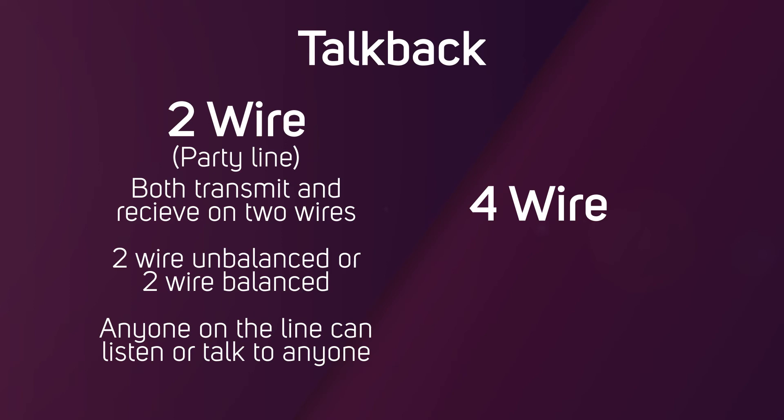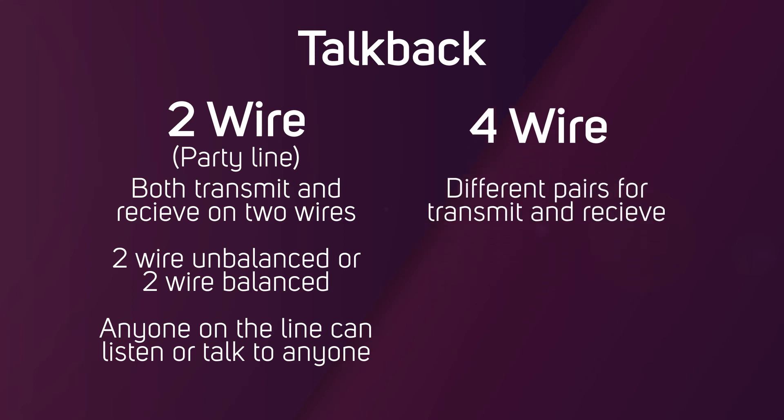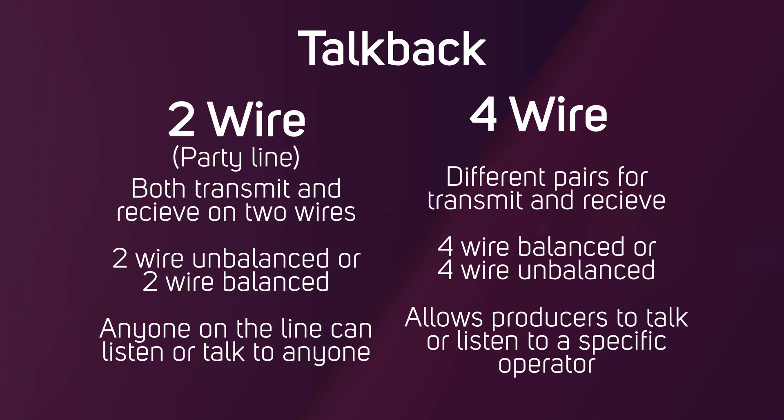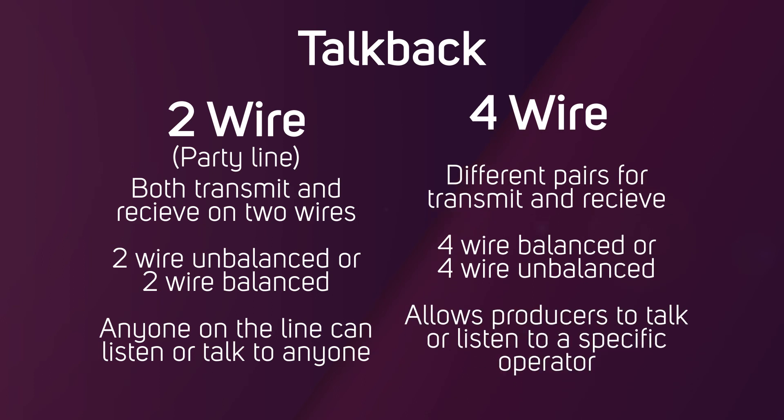Four-wire talkback systems use different pairs for transmit and receive, using either four-wire balanced or four-wire unbalanced connections. This type of system allows for more direct communication, allowing the producer to talk to or listen to a specific operator.